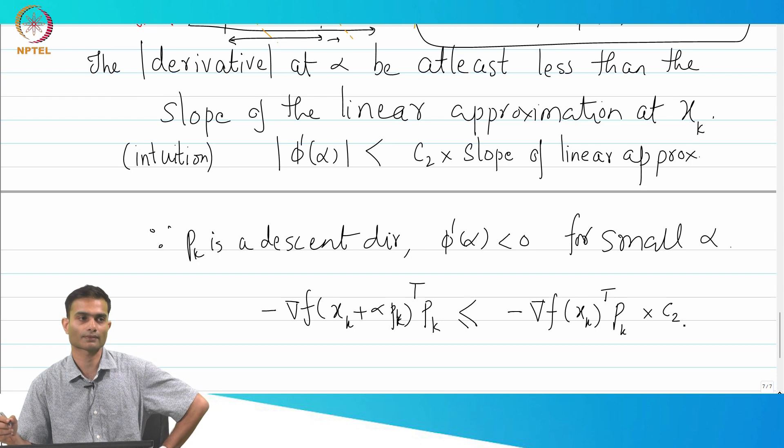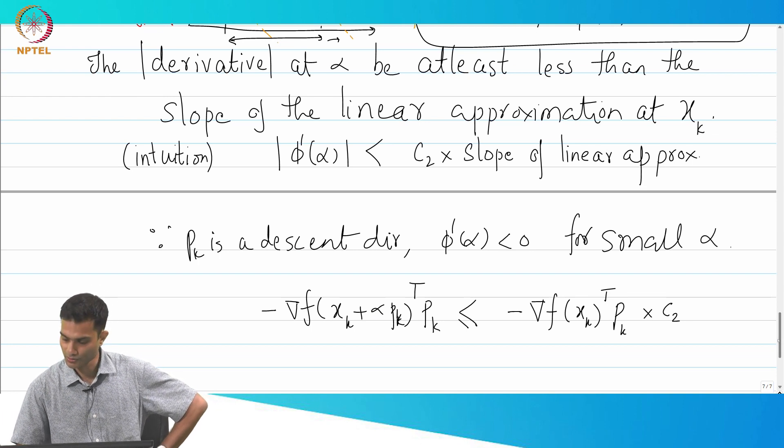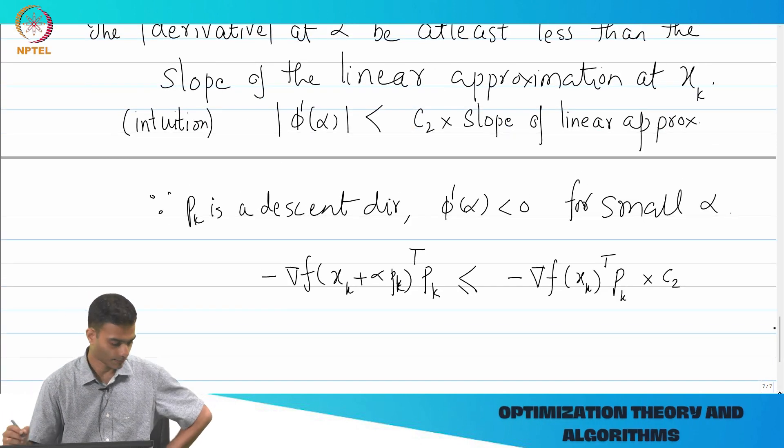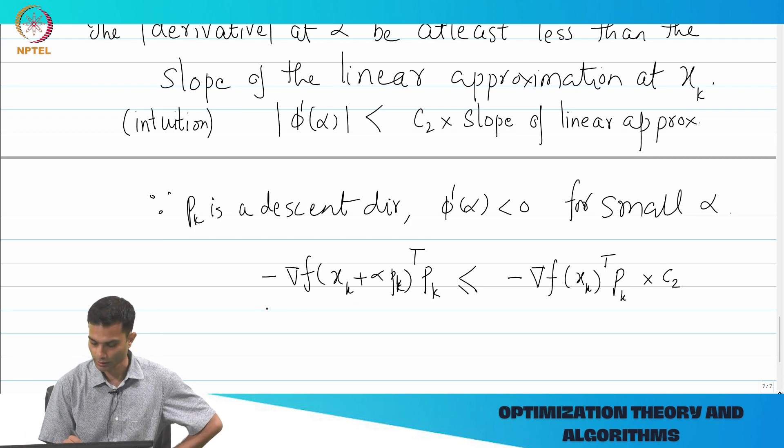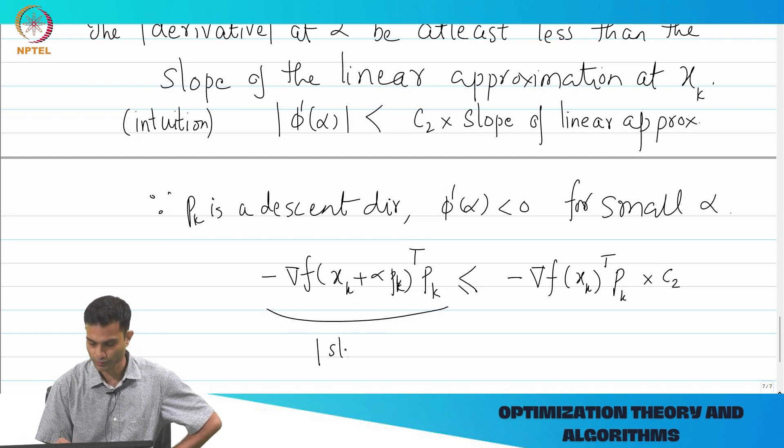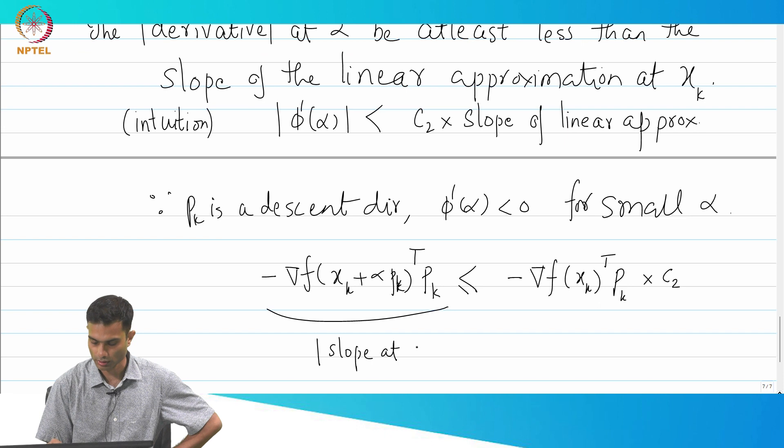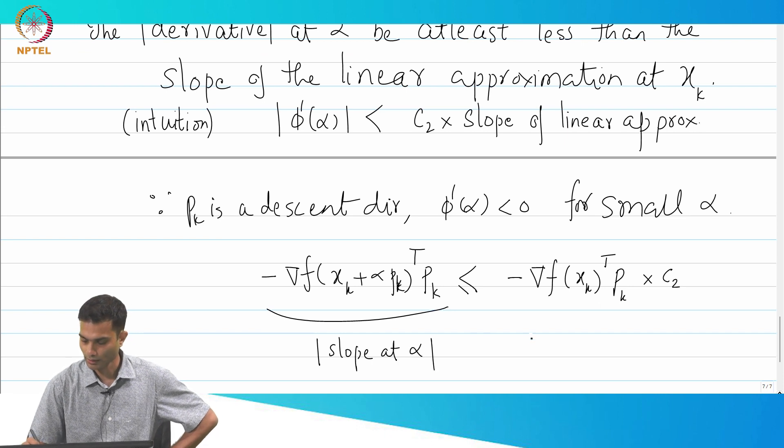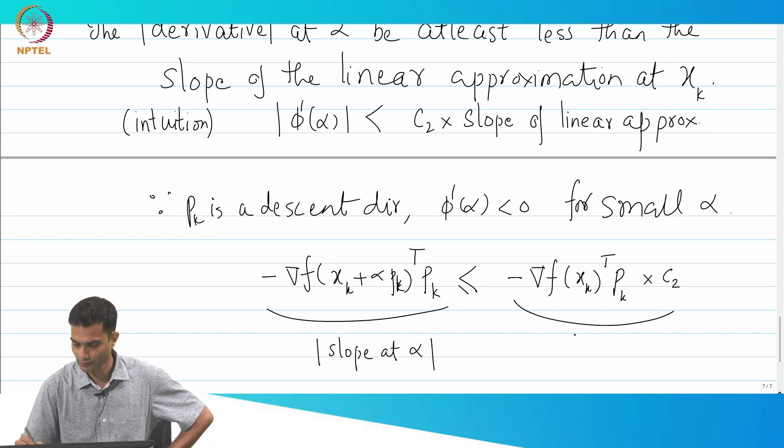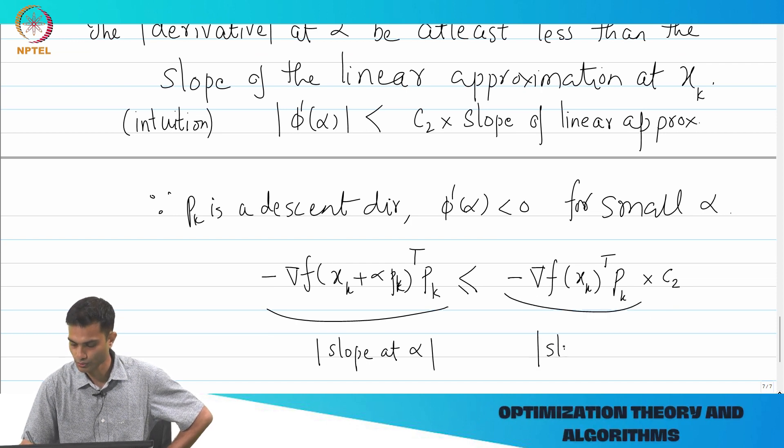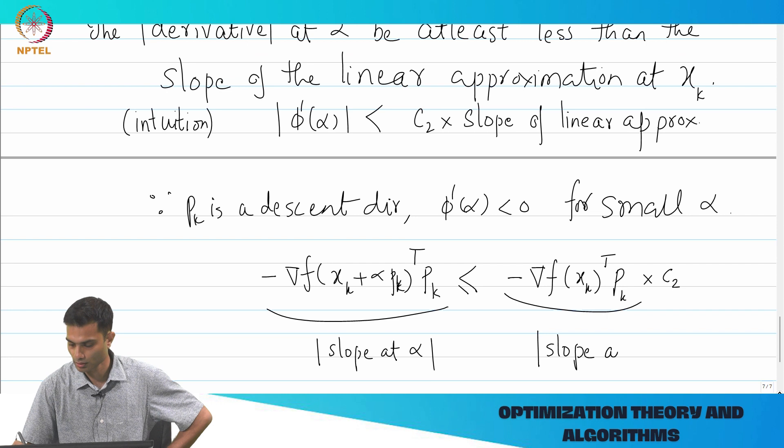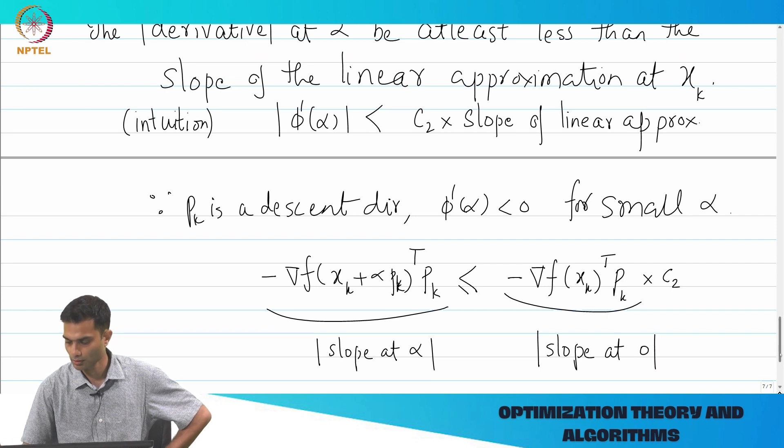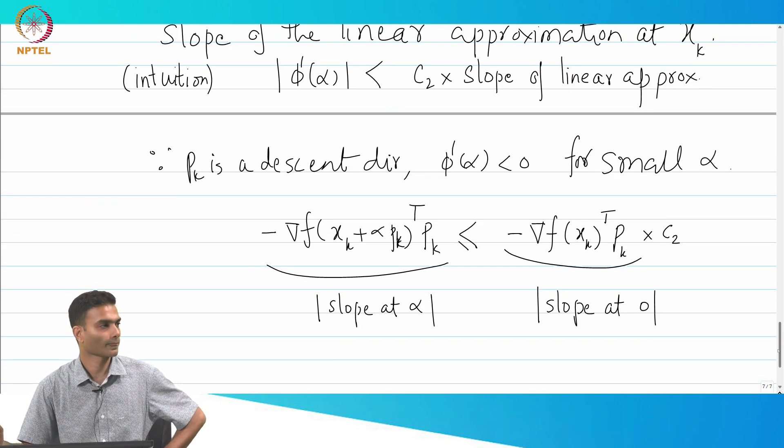C_2 is our relaxation. So you can think of this as mod of slope at α, and you can think of this expression as mod of slope at 0.